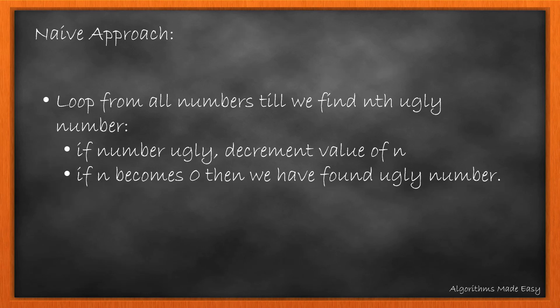The naive approach will be to loop on all the numbers till we find the nth ugly number. If the number is ugly, we decrement the value of n and when n becomes 0, we return the value.